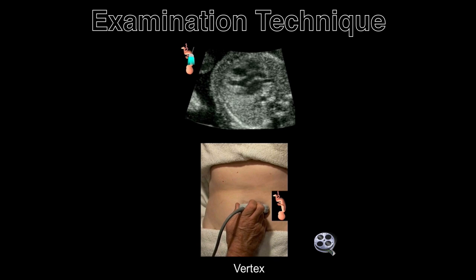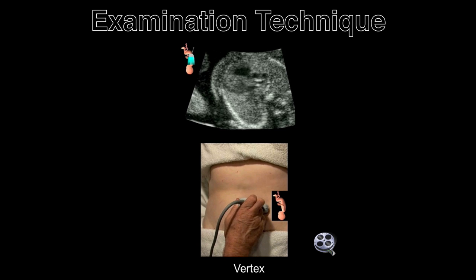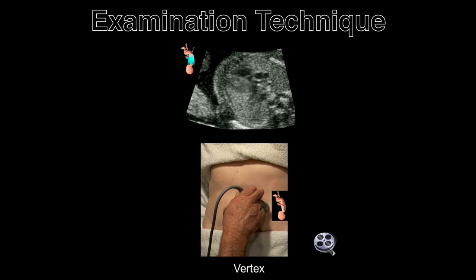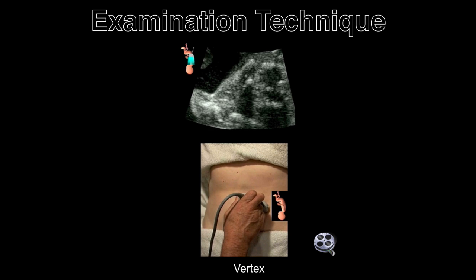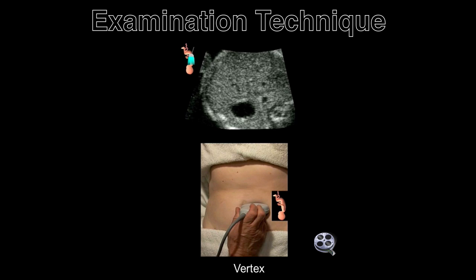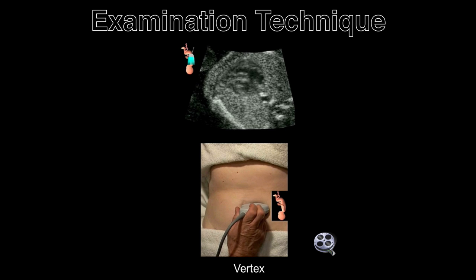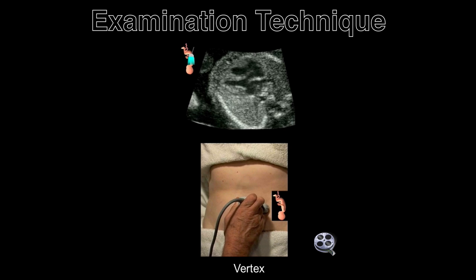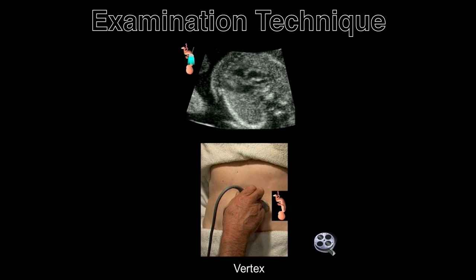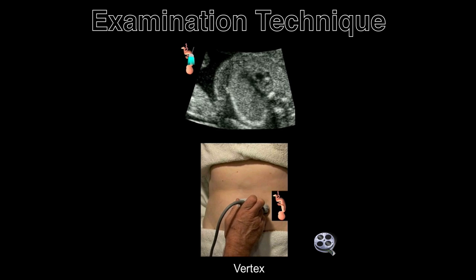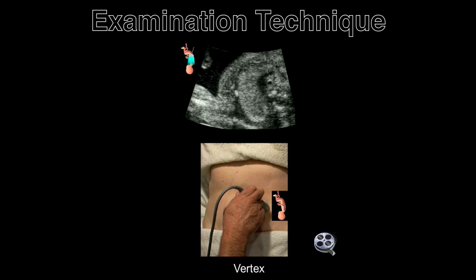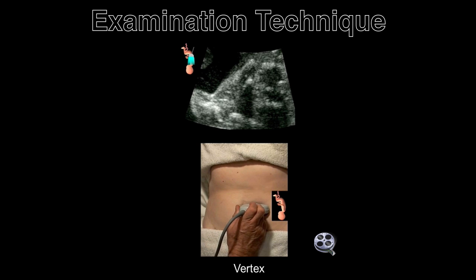Detection of congenital heart abnormalities requires the examiner to evaluate the four-chamber view and the outflow tracks. The easiest method is the transverse sweep, in which the examiner identifies the four-chamber view and directs the transducer beam towards the fetal neck. This scenic clip illustrates the movement of the transducer to obtain the views of the fetal cardiovascular system when the fetus is in the vertex position. A similar motion of the transducer beam would occur if the fetus were in the breech position.